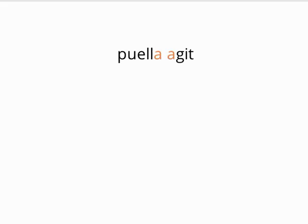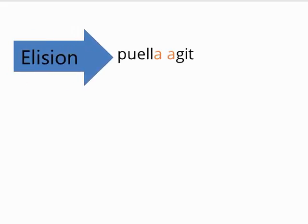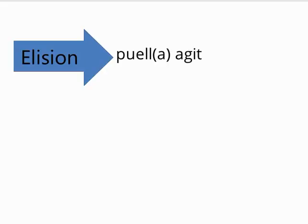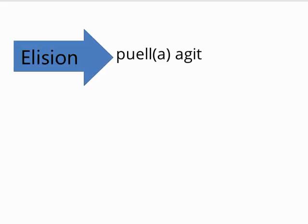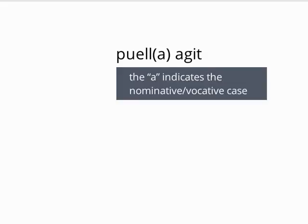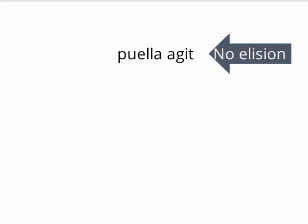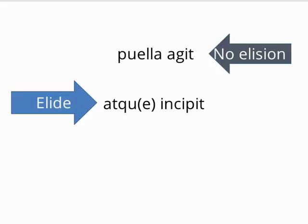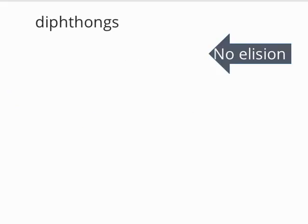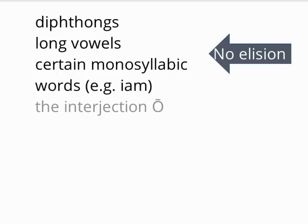Now let's look at the clause puella agit. This clause has a word that ends in a vowel next to a word that starts with a vowel, so following the rules of elision, the final e in puella is elided, becoming puellagit. However, the e in puella provides important grammatical information, namely the case of puella and thereby its function in the sentence. As a result, some authors generally avoided elision of such endings and were more likely to elide final vowels in words like atque or other less significant endings to avoid grammatical ambiguity. Still, almost any vowel could be elided, although diphthongs, long vowels, and certain monosyllabic words like iam and the interjection o were much less likely to be.